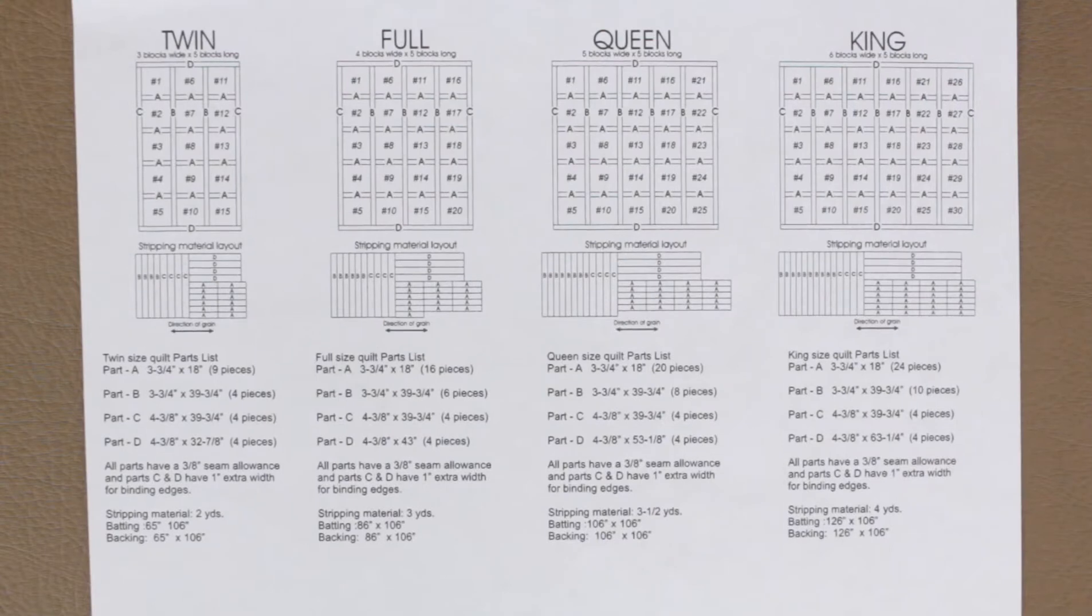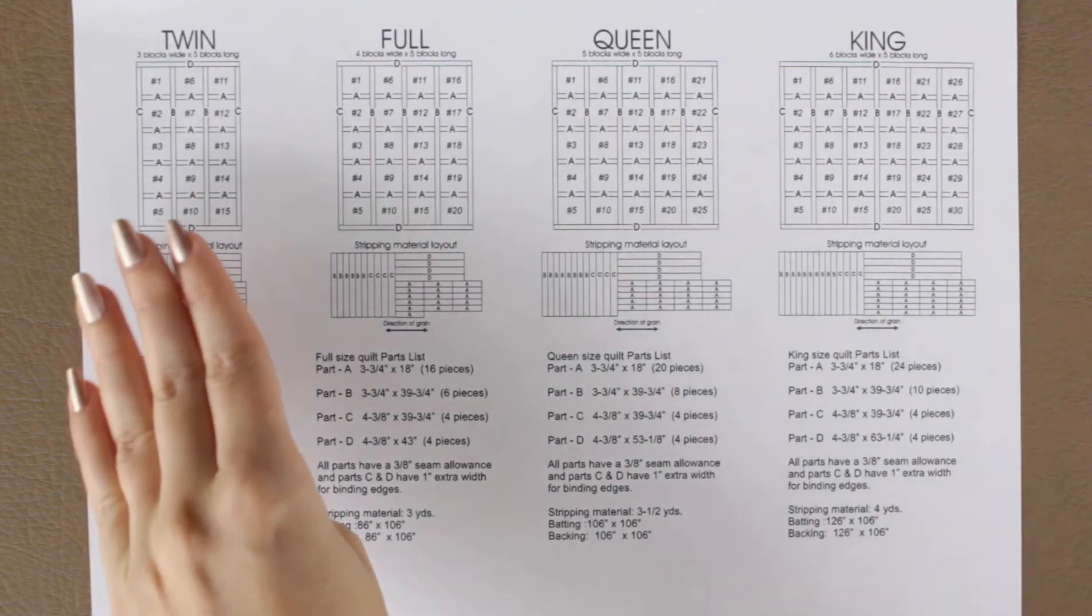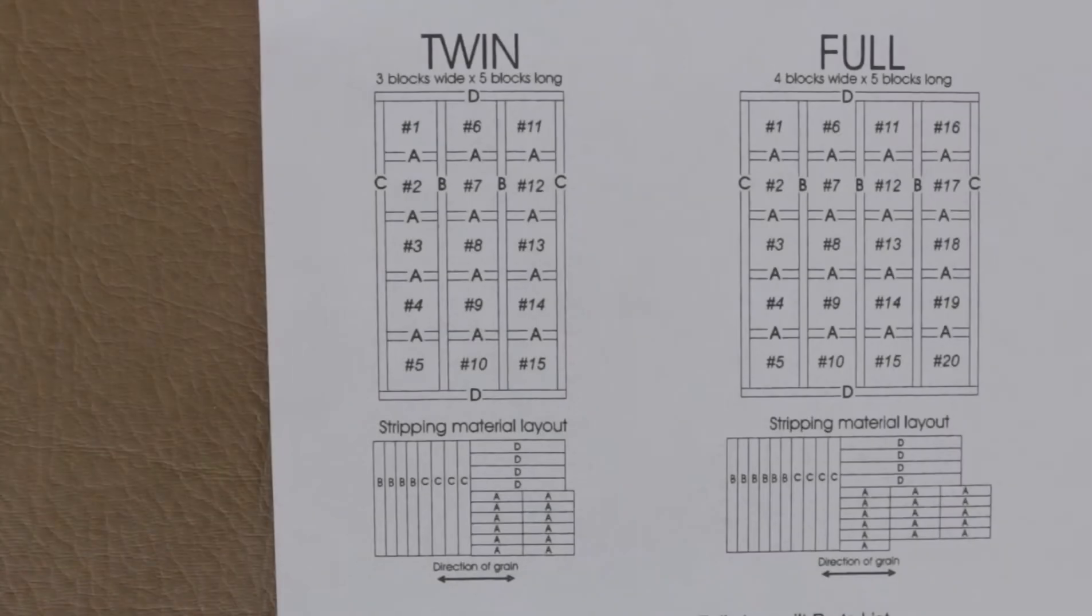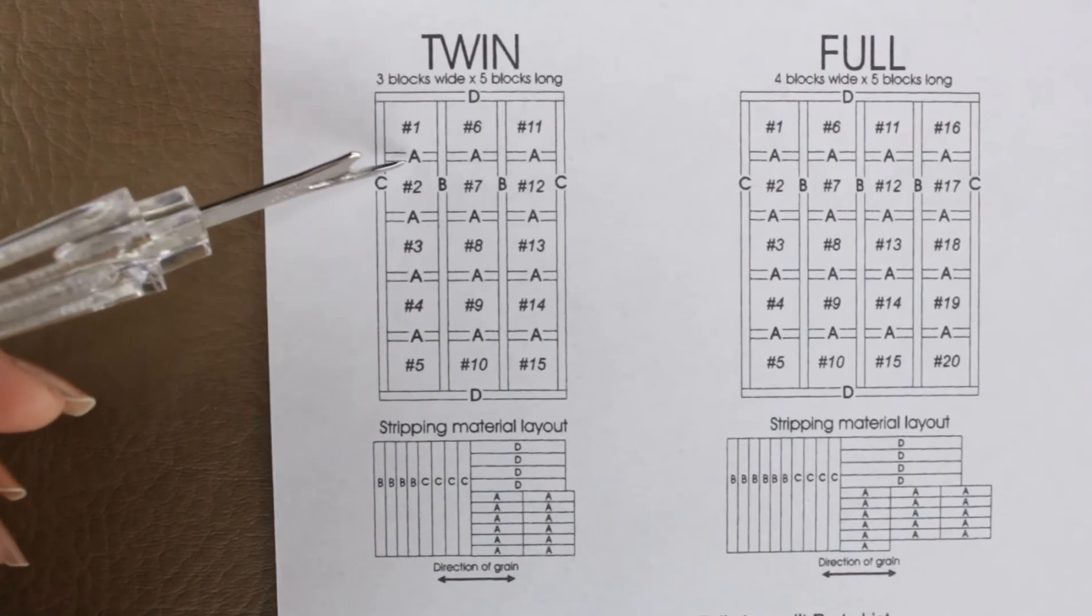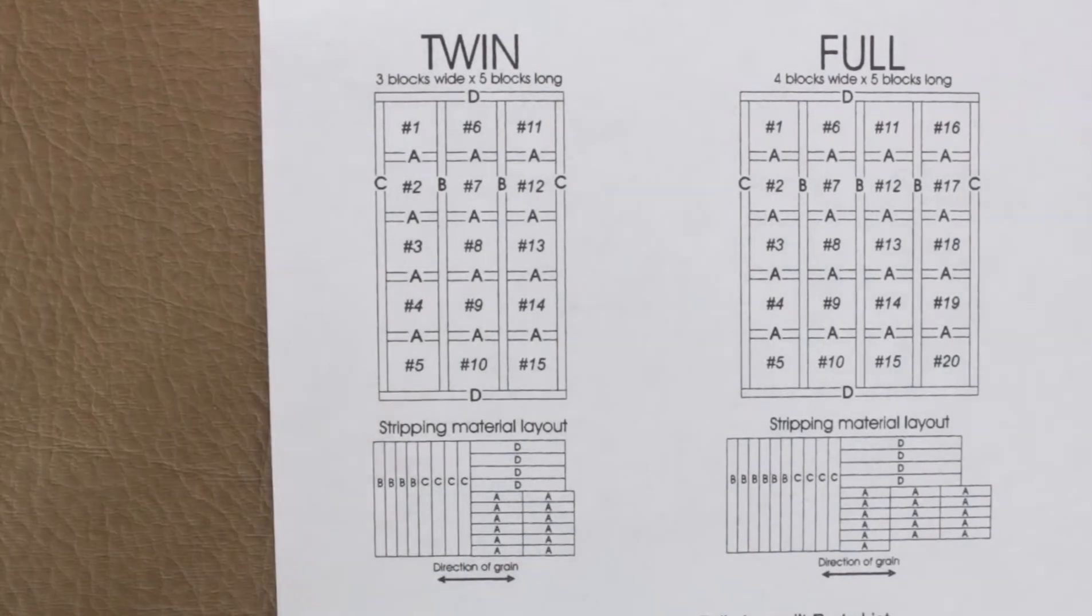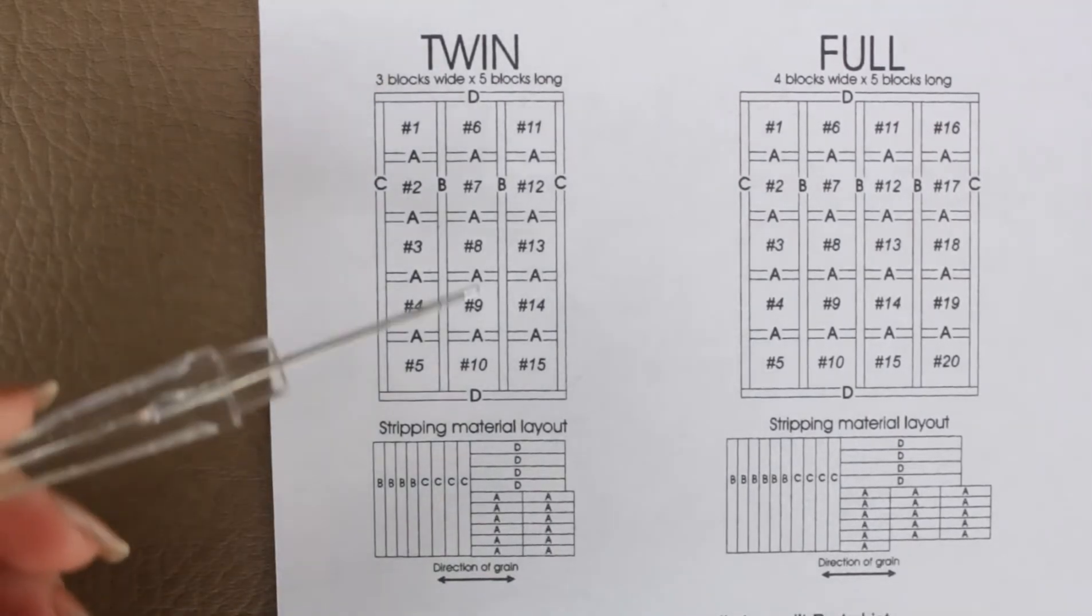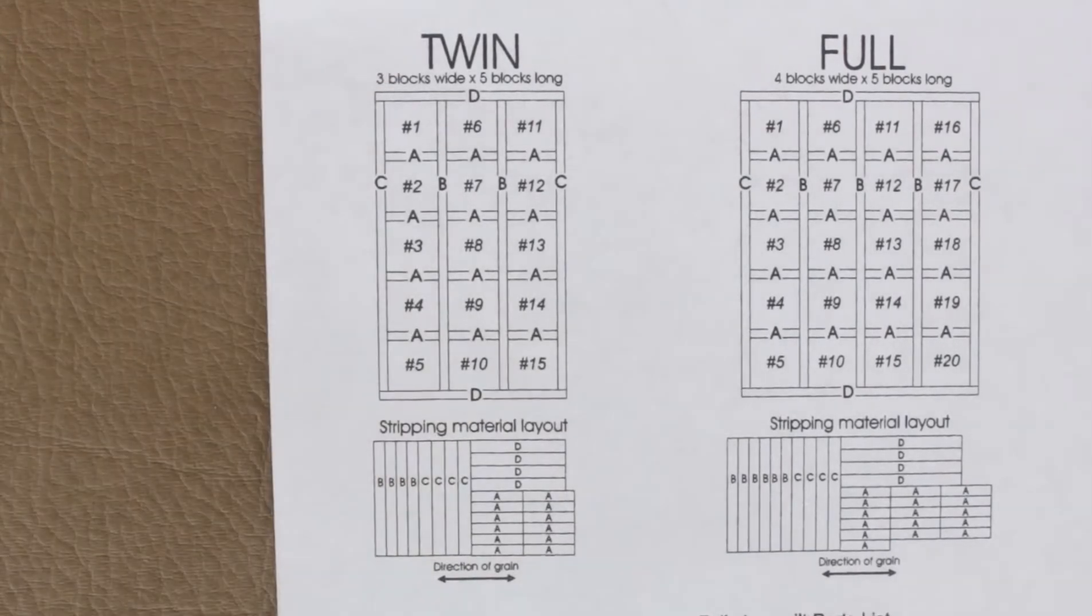To help me figure out the number and size of each strip I need to create, I'm going to use this diagram that's available on the website. In my demonstration, I'm focusing on the twin, but the process is the same regardless of size. Let's quickly go over our diagram so we can understand how it relates to our strips. This chart up here has numbers and letters. The numbers represent the individual embroidered quilt blocks. So if I was to create a twin, I would need 15 total completed quilt blocks to make up the twin size.